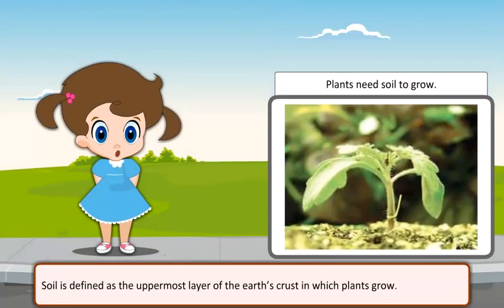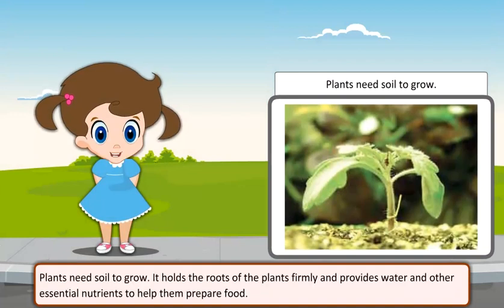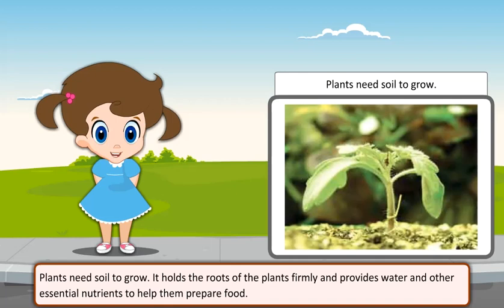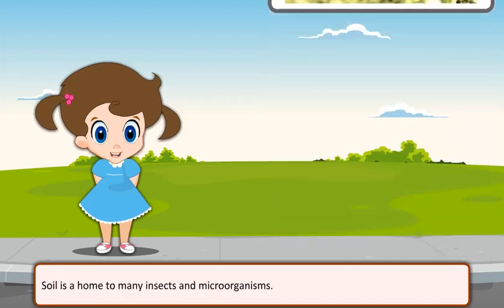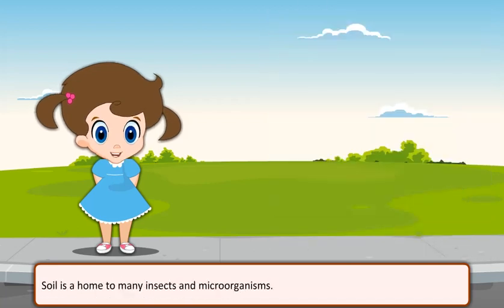Soil is defined as the uppermost layer of the earth's crust in which plants grow. Plants need soil to grow. It holds the roots of the plants firmly and provides water and other essential nutrients to help them prepare food. Soil is a home to many insects and microorganisms.